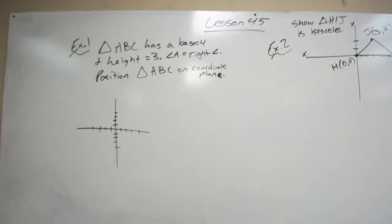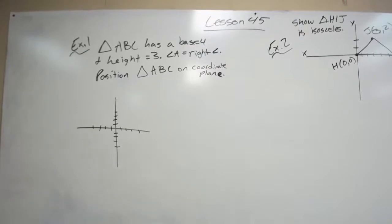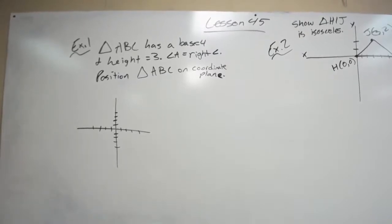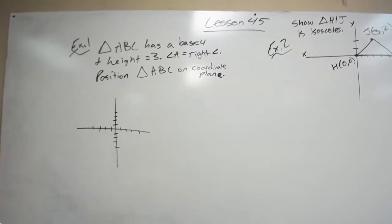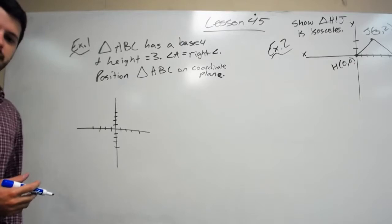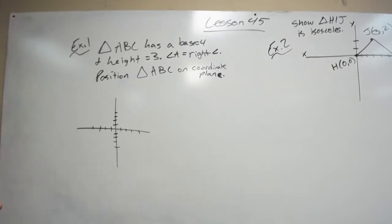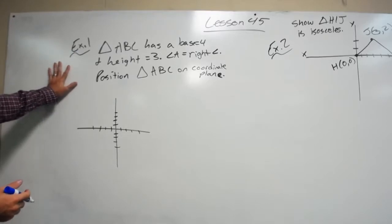Lesson 45, we're going to look at coordinate proofs. Now, coordinate proofs, that can sound scary, but really it's no big deal. It's not very difficult. The main thing is you would have to make sure that you know properties of these different polygons that we're going to use for these coordinate grids. So let's look at example 1 in Lesson 45.